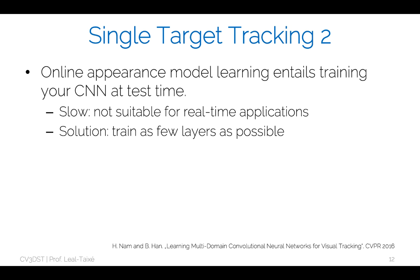The second way of performing single target tracking is learning an appearance model and updating it online as we track the object. The disadvantage is that we need to train the neural network also at test time — we need to build and keep updating an appearance model, which means fine-tuning the CNN at test time as well. This makes it not ideal for real-time applications, but we can use tricks like training only a few layers to keep test-time training as short as possible.